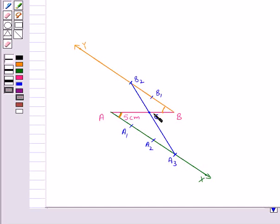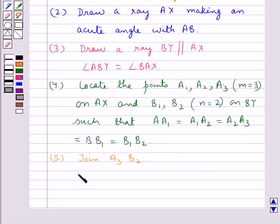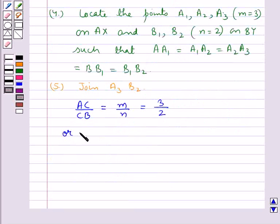This gives us that AC upon CB is equal to M upon N, that is 3 upon 2, or AC is to CB is equal to 3 is to 2.